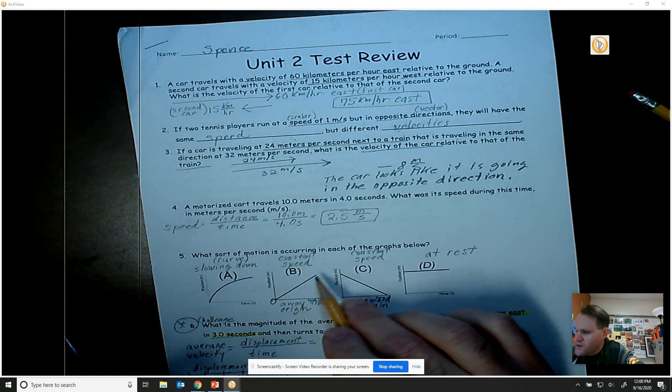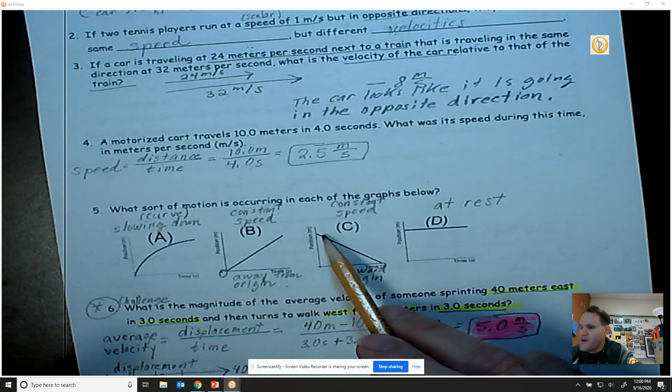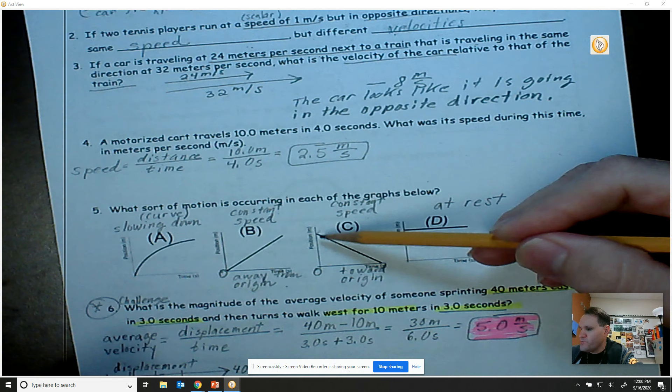So that object is moving at a constant speed but going away from the origin. For letter C, notice that the object is going at a constant speed yet it's going back towards the origin. The origin then was understood to be zero. The object starts away from the origin and now it moves toward the origin going at constant speed.